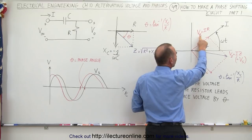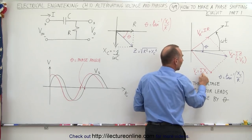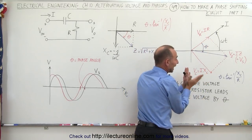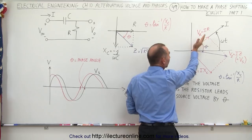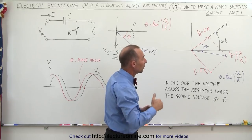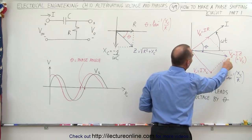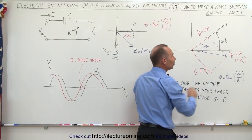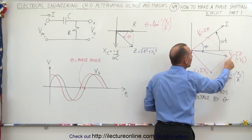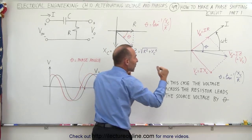The voltage across the resistor is the current in the circuit times the resistance, just as the voltage across the capacitor is the current times the capacitive reactance. Since the resistance and the capacitive reactance are 90 degrees out of phase, the voltage across the resistor and the voltage across the capacitor will also occur at a phase difference of 90 degrees. V sub Z equals the current times the impedance, and the phase angle between V sub Z and V sub R is exactly the same theta as the phase angle between the resistance and the impedance.